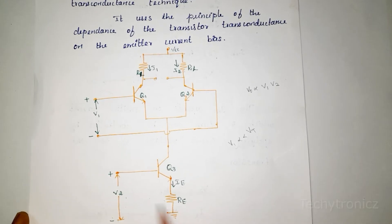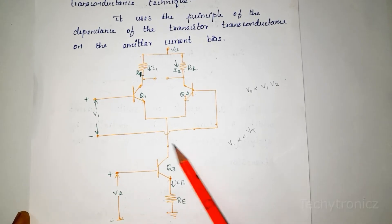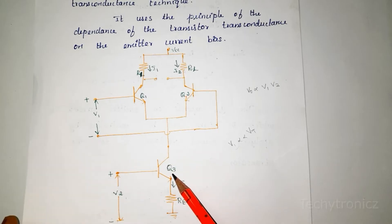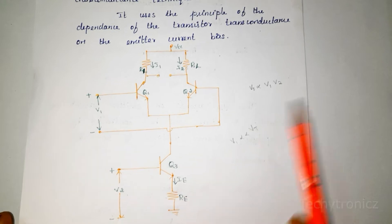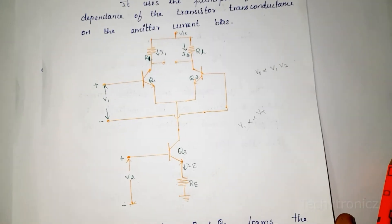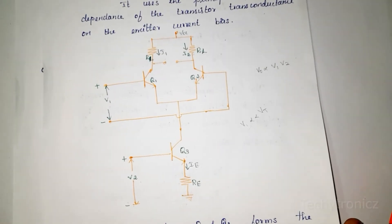V2 is the input applied across R2. This emitter current flows through the circuit. We are also using one transistor Q3. We need to calculate the output voltage, which is the product of the two input voltages V1 and V2.